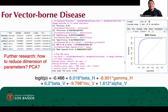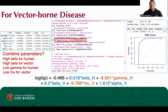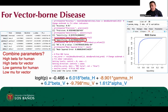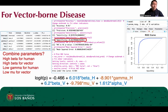In vector-borne diseases, since two species are involved, can we combine parameters with similar impacts? We know that if the infection rate in both humans and vectors is high and the recovery rate for humans and death rate for vectors are low, then we are confident that an outbreak will occur. However, if parameter values in humans and vectors are of opposite levels, how can we reduce the false positives and increase the specificity? This is a topic for further research.